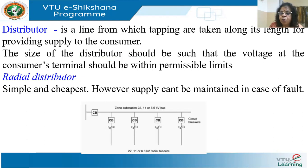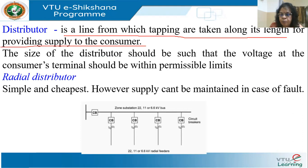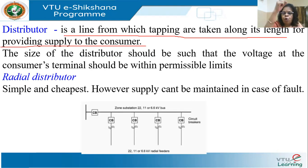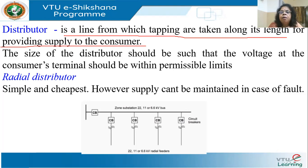Next we have distributors. A distributor is a line from which tappings are taken along its length for providing power to the customer. From your local transformer, a conductor runs and is tapped and given to local poles. That is the fine distinction between a distributor and a feeder, though these two terms are often used interchangeably.